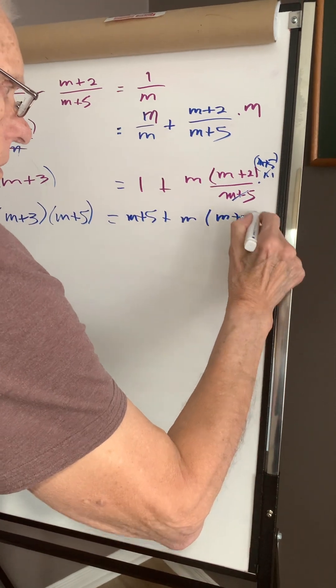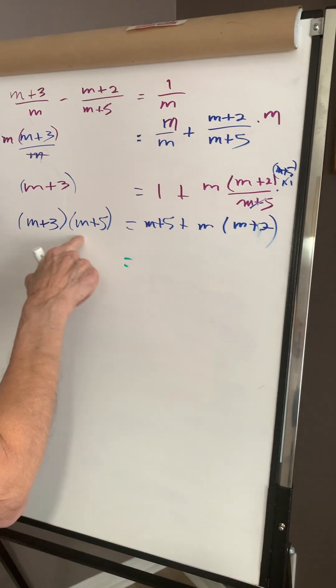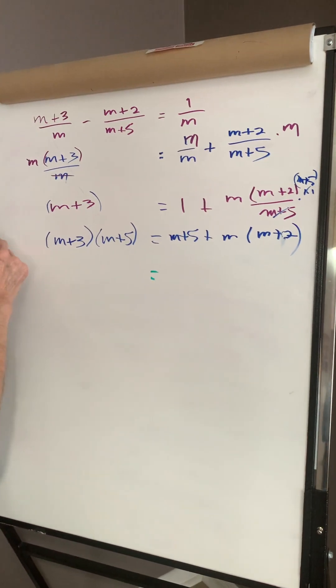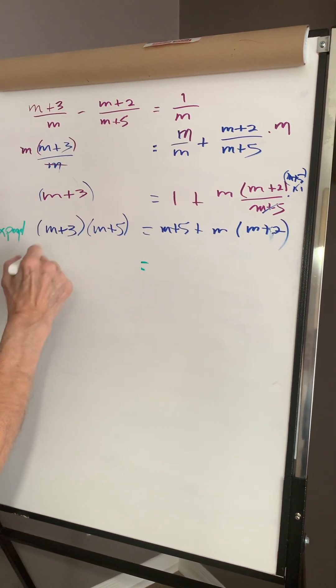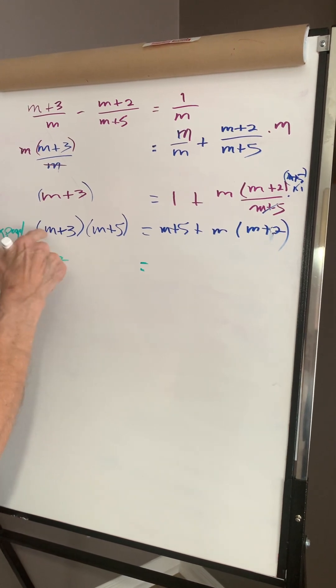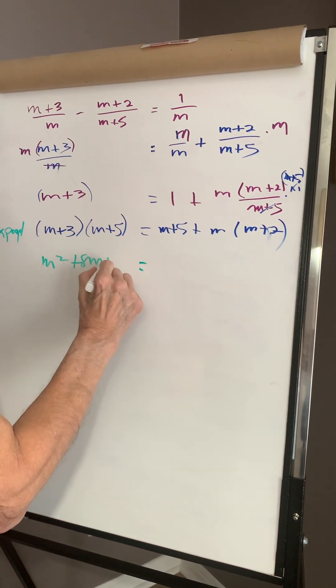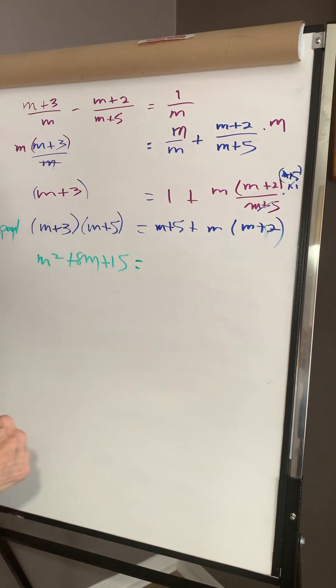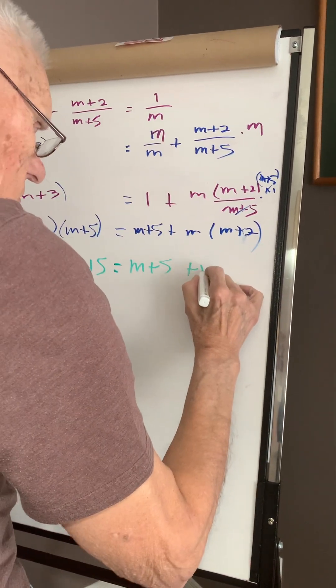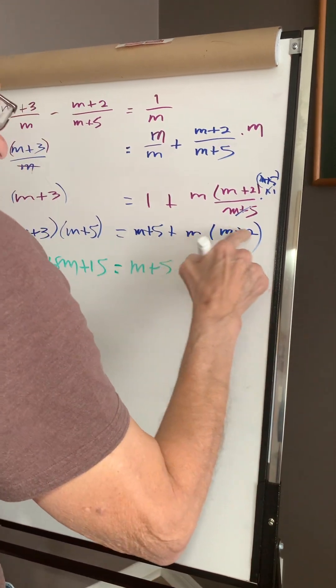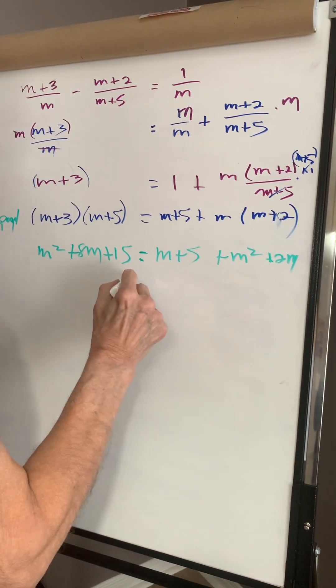This is a two, so we don't get confused. Okay, let's change the color a little bit. We're going to expand. M times m is m squared, five m and three m is eight m, and three times five is fifteen. And this is m plus five. M times m is m squared, and m times two is two m. My equal sign is still in the middle.